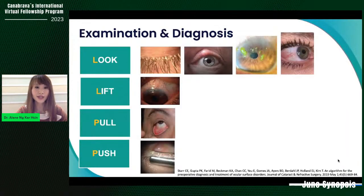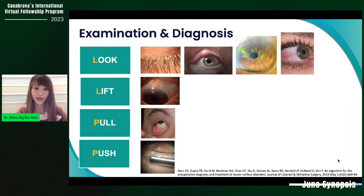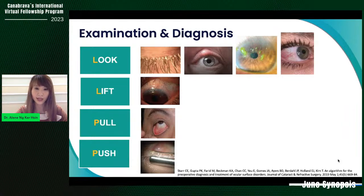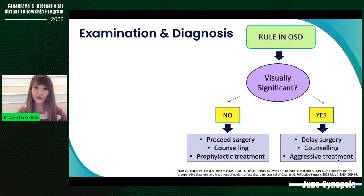The image shows pre- and post-dry eye treatment topography. We can see irregular mires with a steeper K in the upper image compared to the image below, showing smoother placido disc imaging with flatter K values after treatment. This shows that optimization of ocular surface improves accuracy. MMP9 has been found to be elevated in patients with dry eye and different types of OSD, including Sjögren's syndrome and MGD, and correlates with dry eye disease progression over time.